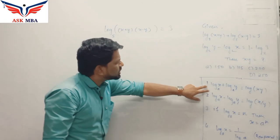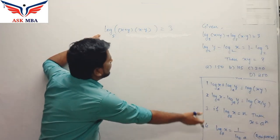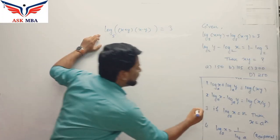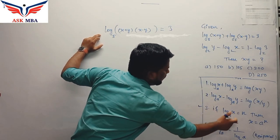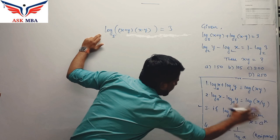After using first property, can you see any other property that will be used here? Clearly use the third property which says log of x base a equal to n then x equal to a power n.